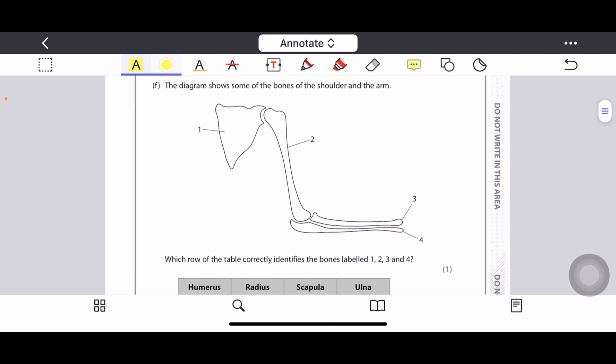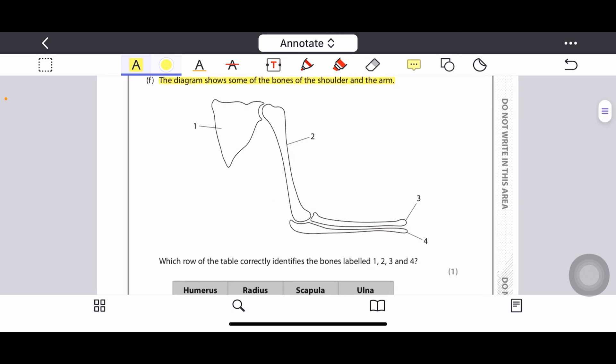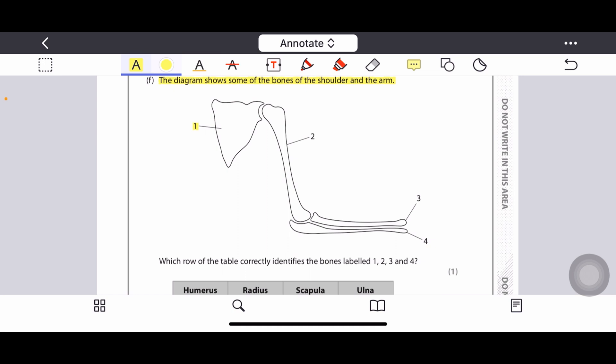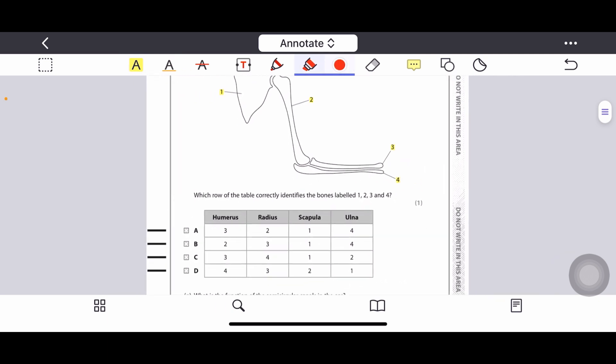Question F: The diagram shows some of the bones of the shoulder and the arm. Let us see what are the bones. Bone 1 is showing scapula, bone 2 is showing humerus, bone 3 is radius and bone 4 is ulna. So bone 1 is scapula, bone 2 is humerus, bone 3 is radius, bone 4 is ulna. You have to learn these names. Option B is the correct option.